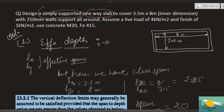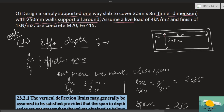The question: Design a simply supported one-way slab covering 3.5 meters to 8 meters inner dimensions — clear span given for both dimensions — with 250 mm wall support all around. Assume a live load of 4 kN/m² and finish of 1 kN/m².